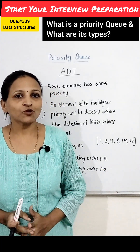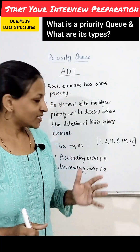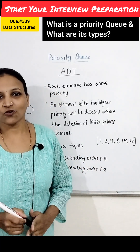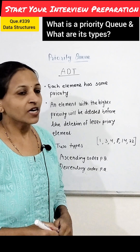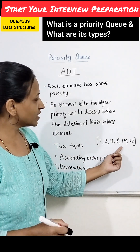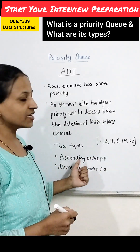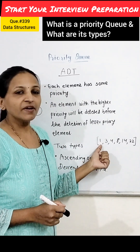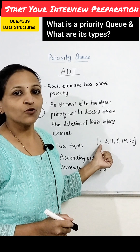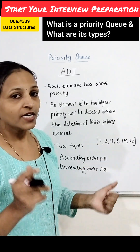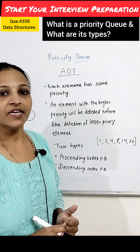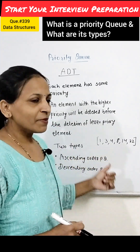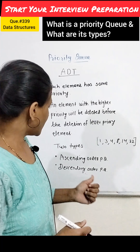There are two types of priority queues: ascending order priority queue and descending order priority queue. In an ascending order priority queue, the element with the lowest value has the highest priority and will be removed first.